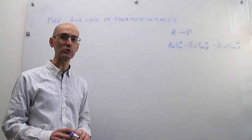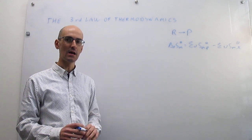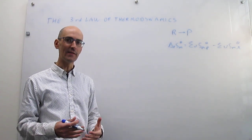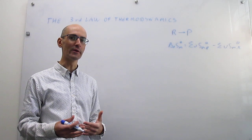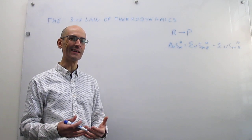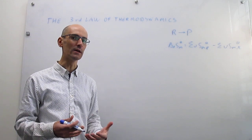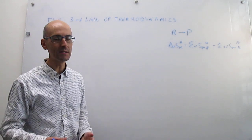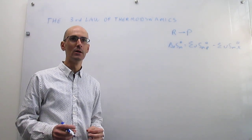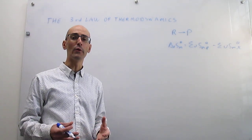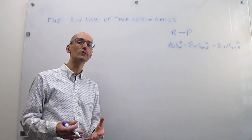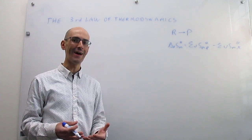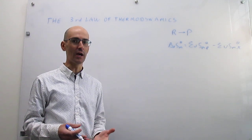For entropies, we actually can use absolute molar entropies. And that's because the third law of thermodynamics gives us a way to determine those absolute molar entropies. So what is the third law of thermodynamics? Remember that entropy is a measure for how matter and energy are dispersed.